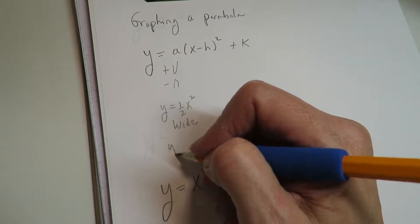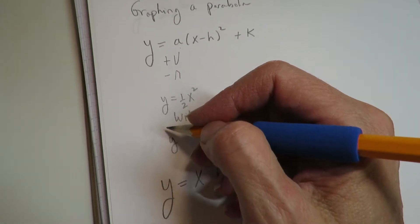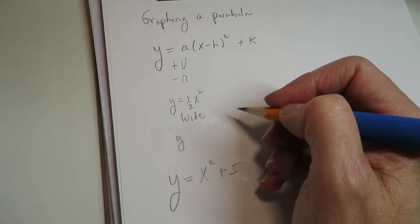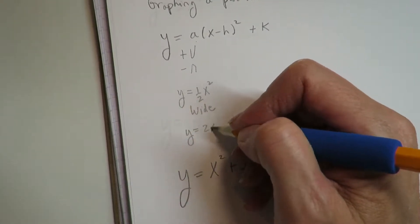If it's somewhere between less than negative 1 or greater than positive 1, it's going to end up being narrow.